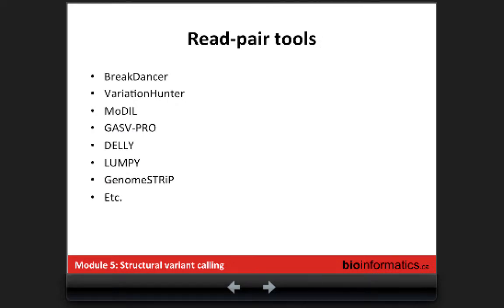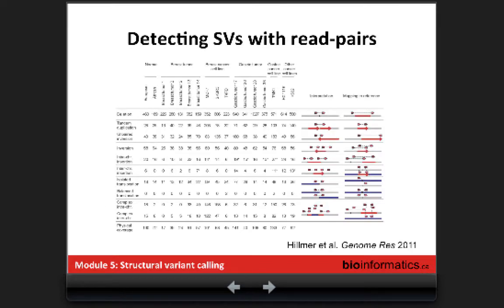This is a non-exhaustive list of read pair callers available. Today we will use DELLY to do the calling. You will understand why we use DELLY because it has a main advantage. When you do read pair calling only, mostly you will detect deletions — which are a major part of events — while others have trouble defining other types of variants.